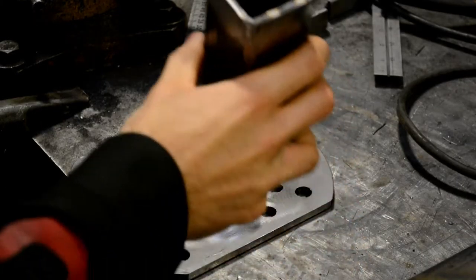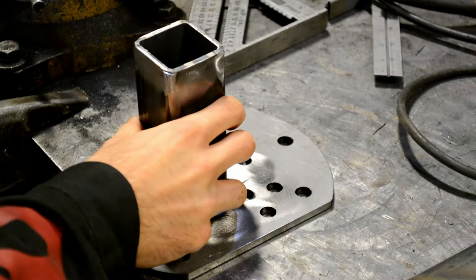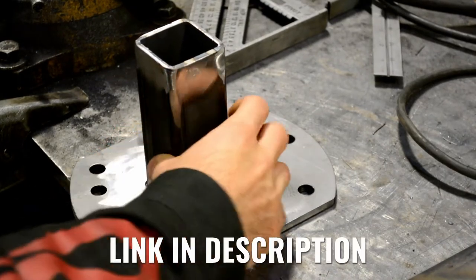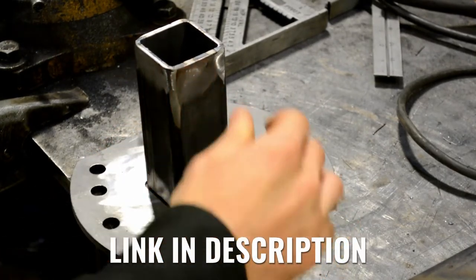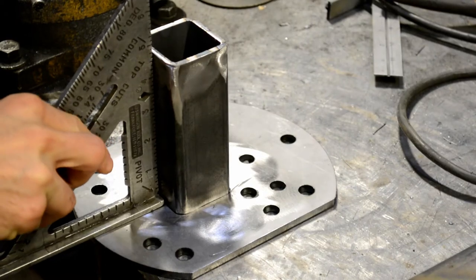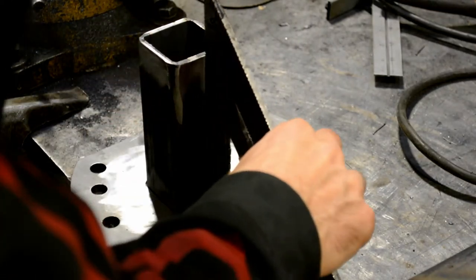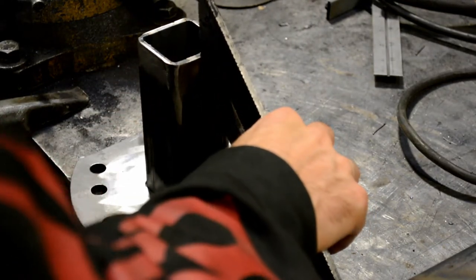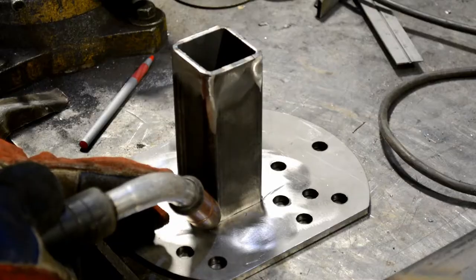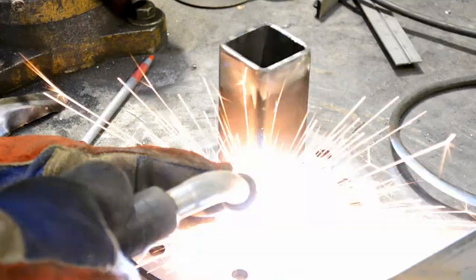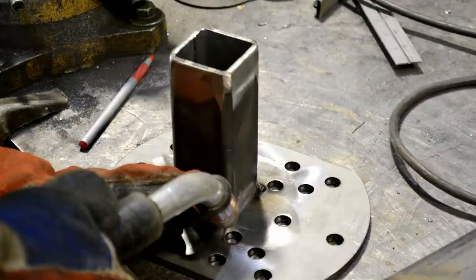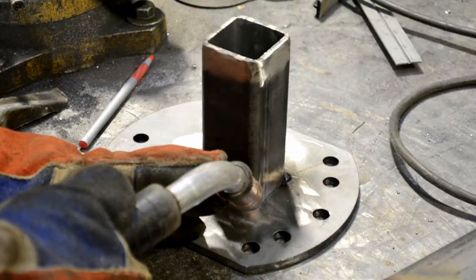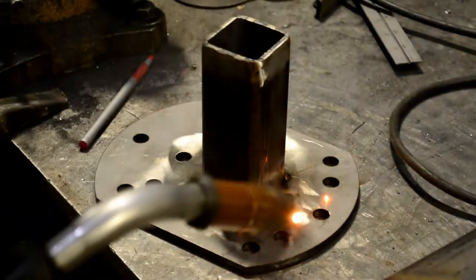Then moving on to the spare tire mounting plate, I bought this plate from a company called Barnes 4WD. They make a nice multi-pattern spare tire mounting plate. And I machined a little pocket in the back of it so that my 2x2 box tube would sit really nicely exactly where I wanted it. So I just laid that tube in there, put down a few tacks, and then finished welded it. And it ended up being perfect.